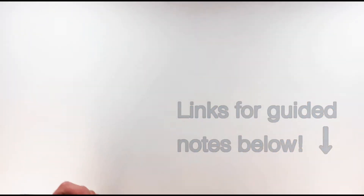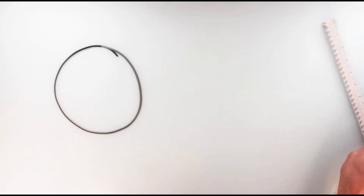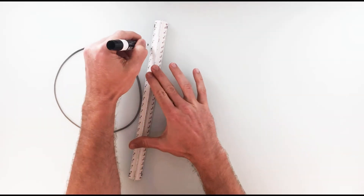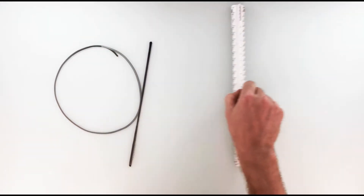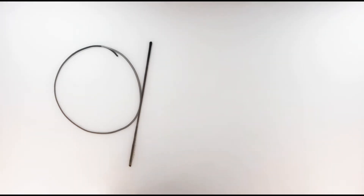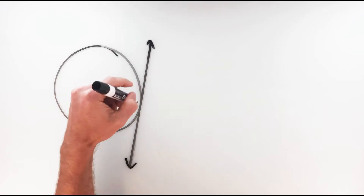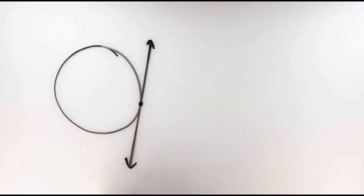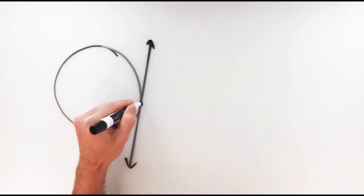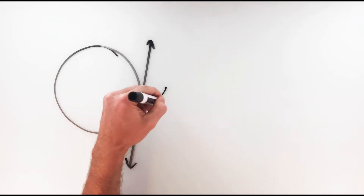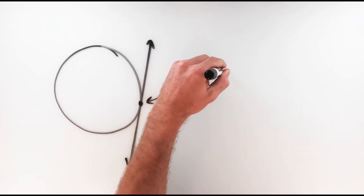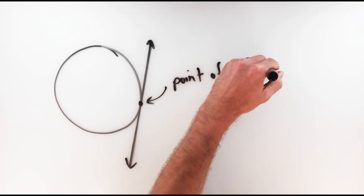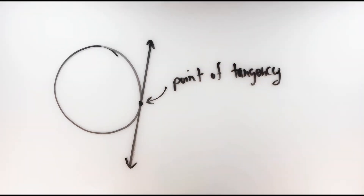By definition, when a line is tangent to a circle, that means that it intersects the circle in exactly one point. What we're looking for is a line that just barely touches the edge of a circle. Tangents can be segments or rays, but regardless, they still have to be touching the circle in just one spot. That spot is called the point of tangency.